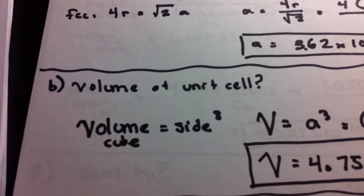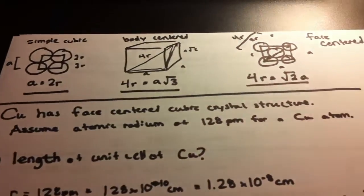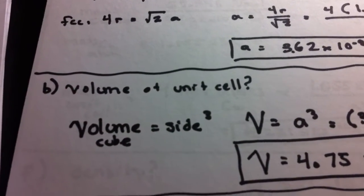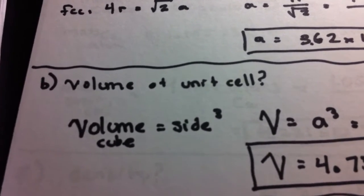Next, we want to find the volume of the unit cell. So if we want to think about a unit cell, it's basically just a cubic structure. For a unit cell, it's basically the volume of a cube, which is going to be the side or edge cubed.